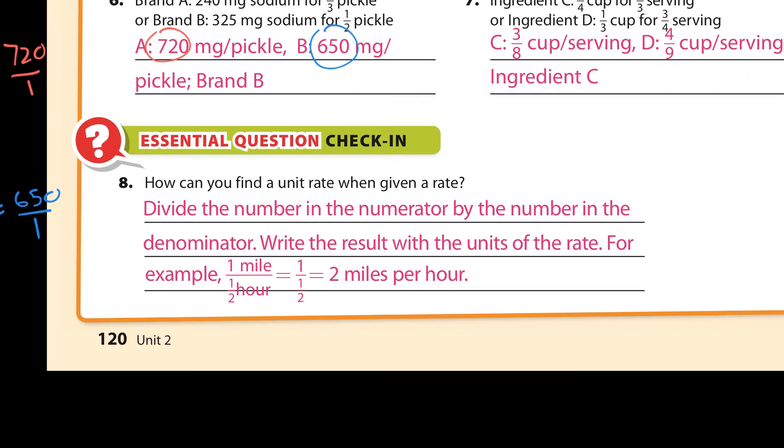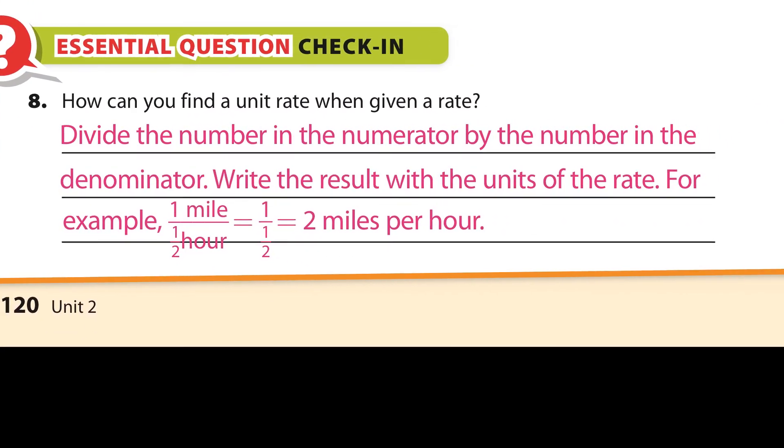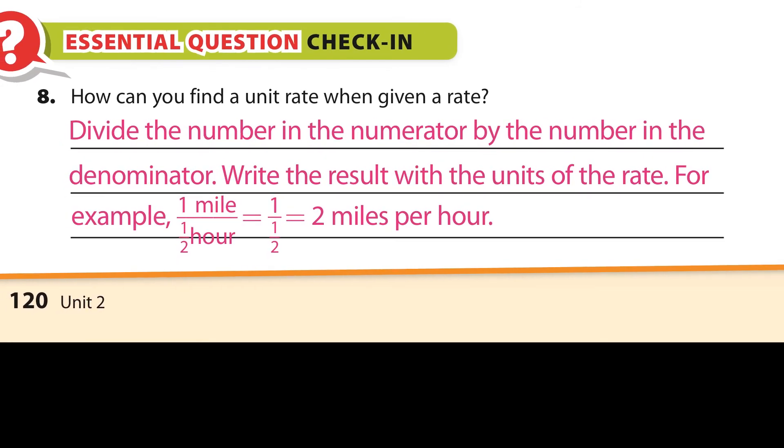Finally, this is the big idea here. How can you find the unit rate when given a rate? This is so important. You divide the number in the numerator by the number in the denominator. Write the result with the units of the rate. For example, the numerator divided by the denominator, 1 divided by 1 half. It's 1 divided by 1 half, which is 2 miles per hour. And just to show you that real quick, 1 divided by 1 half is 1 times 2 over 1, which is 2 over 1, which is just 2. So that's how we get the 2 right there. All right, so there you go. Thanks for watching, I hope it's been helpful. Bye.